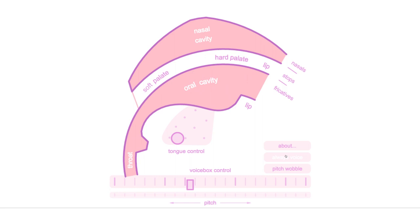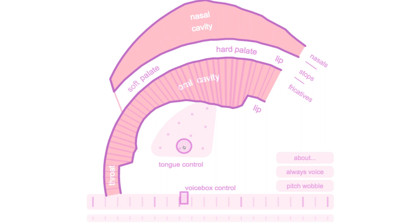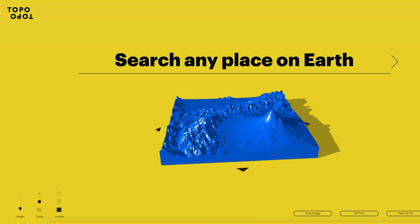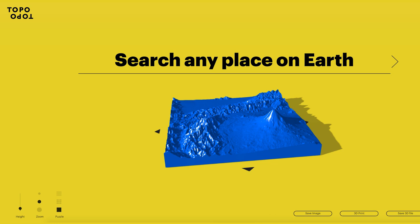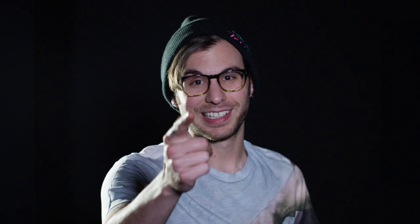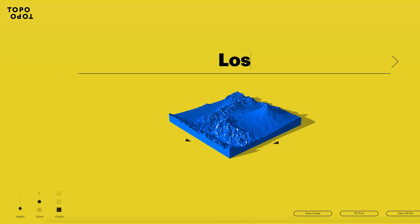Speaking of tongues, I'm trying to think of a word and it's on the tip of my tongue. This website lets you type in anywhere in the world and makes a 3D model of it. Anywhere — Los Angeles, Kansas, Zimbabwe, Sydney, Hong Kong — whoa.